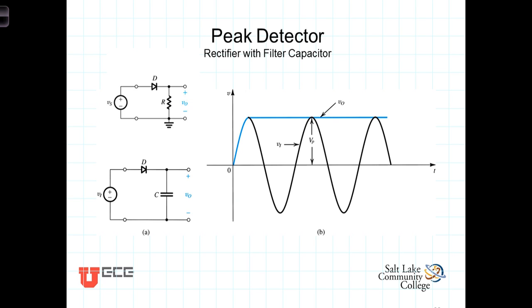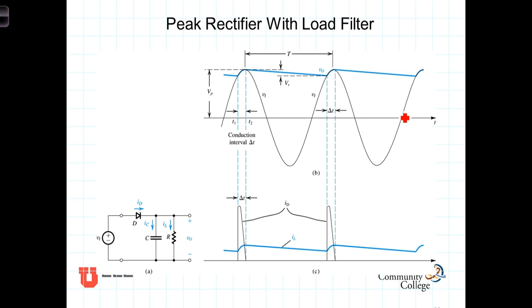We previously looked at the peak detector, or the peak rectifier, which had a diode and a capacitor in series with each other. We saw that during the first part of the cycle, the capacitor charged up to the peak, and then as the source dropped and the voltage on one side of the diode went less than the other side, the diode kept the capacitor from discharging, so the voltage across the capacitor remained constant. We're now going to look at a more realistic situation where we have that same diode and capacitor, but now connected to a load, represented by a resistor.